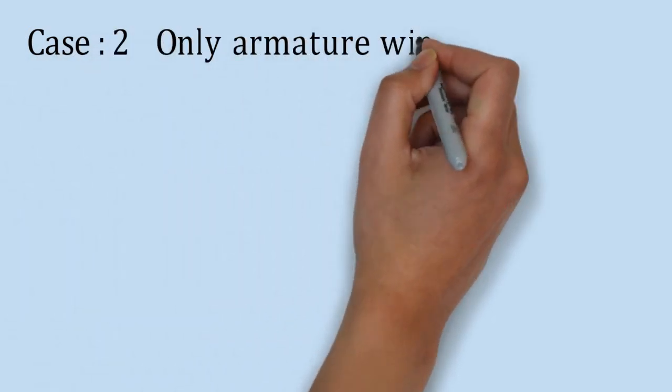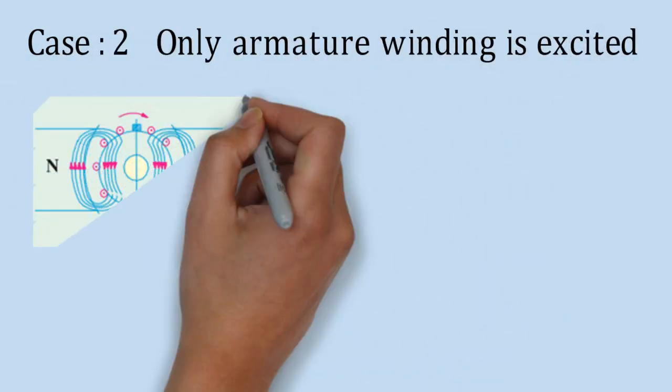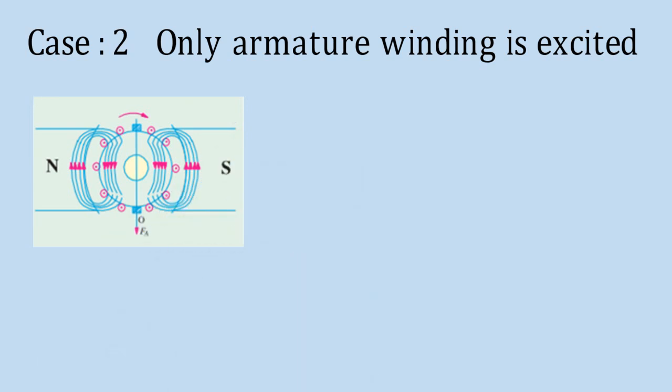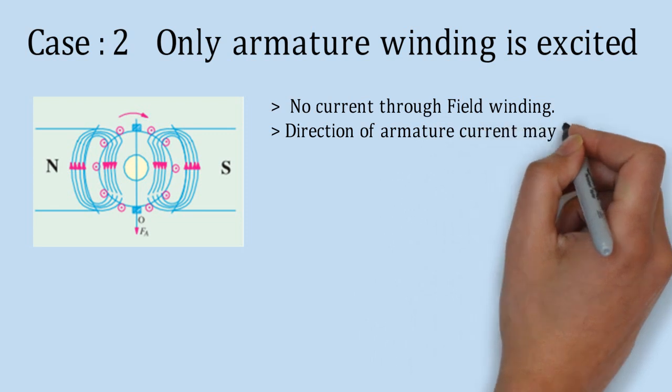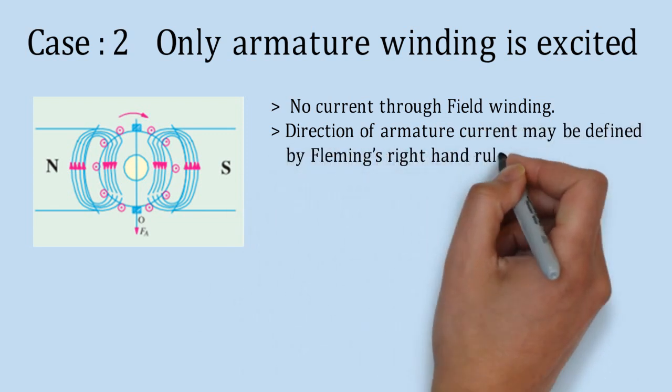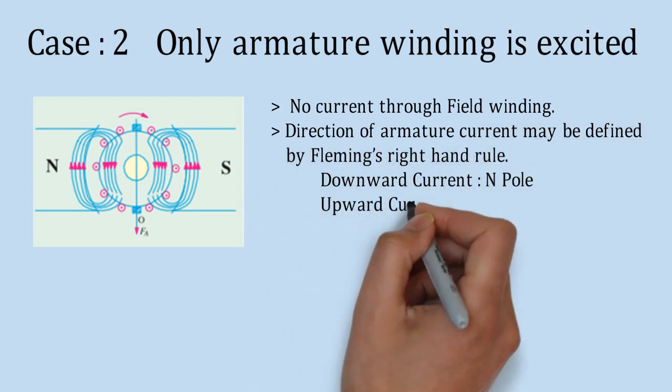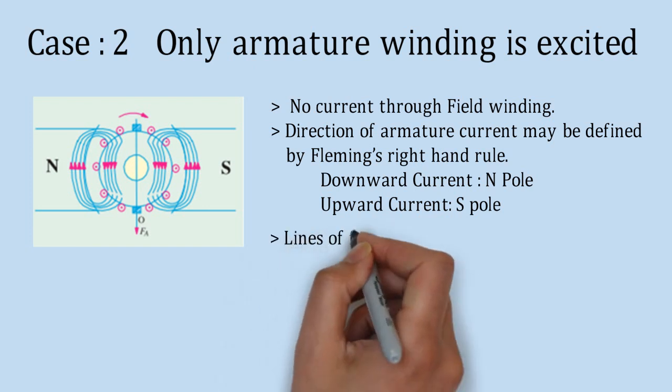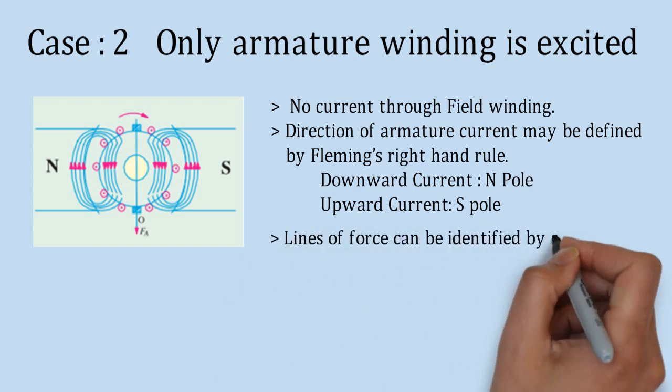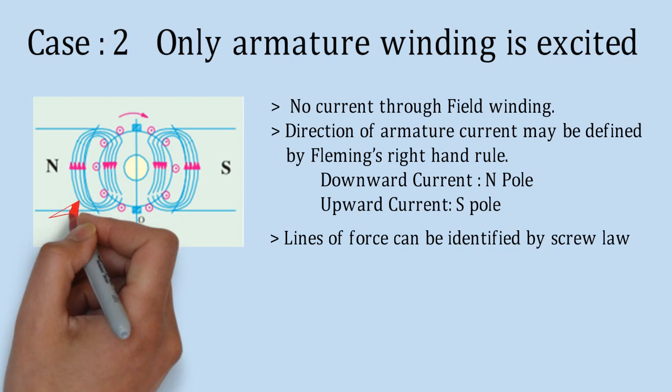Case 2 is when only armature winding is fed by supply. Hence, no current is passing through field winding. Direction of armature current is as per Fleming's right hand rule. So, near N pole, current is in downward direction, and near S pole, it is in upward direction. Here, force line could be identified by screw rule.